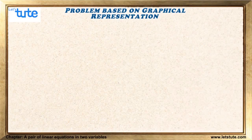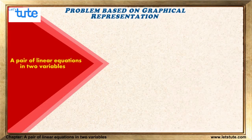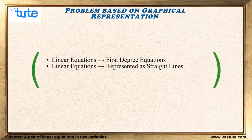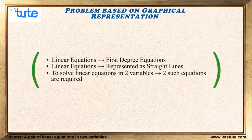In this session we are going to solve a problem based on a pair of linear equations in two variables. By linear equations we mean first-degree equations, which can be represented by straight lines. When we have linear equations in two variables, we need two such equations to find the values of each variable. In this video, we are going to solve this problem using graphical representation.